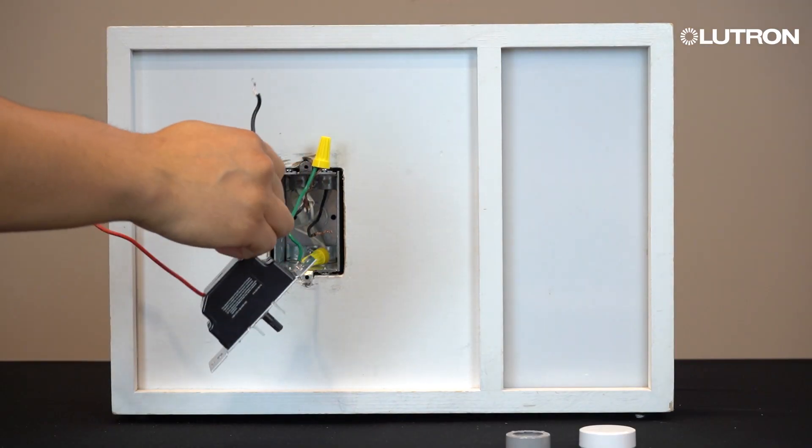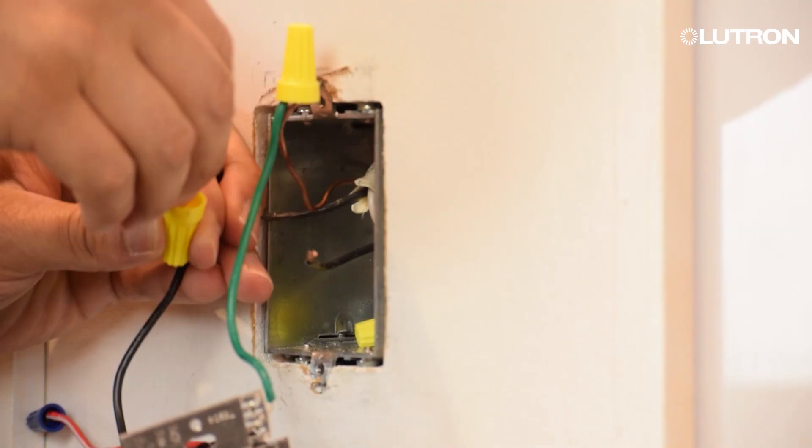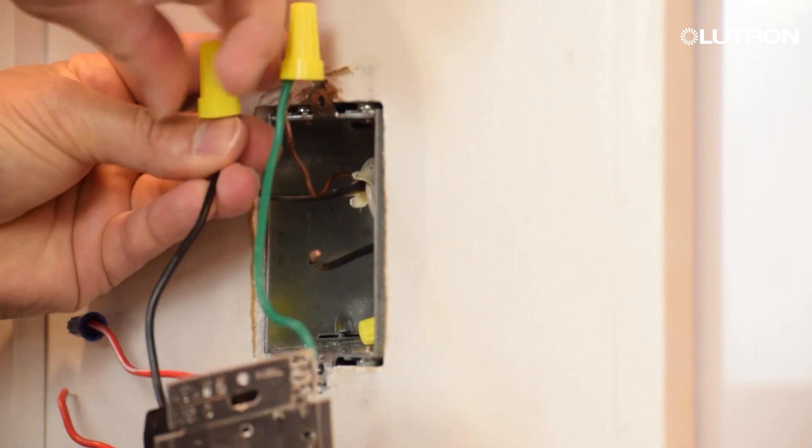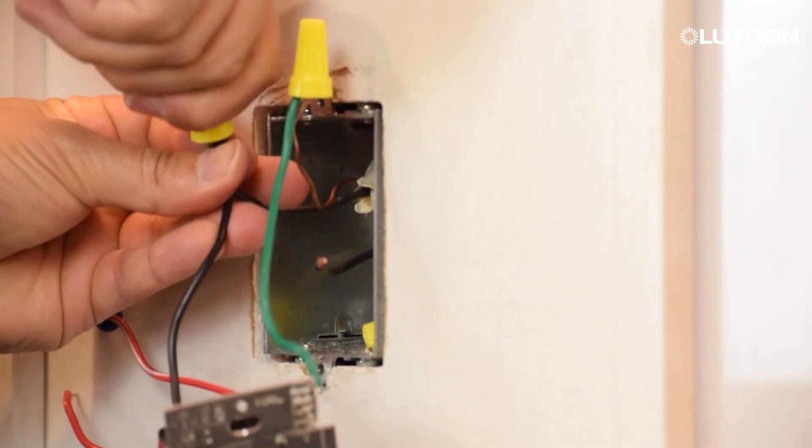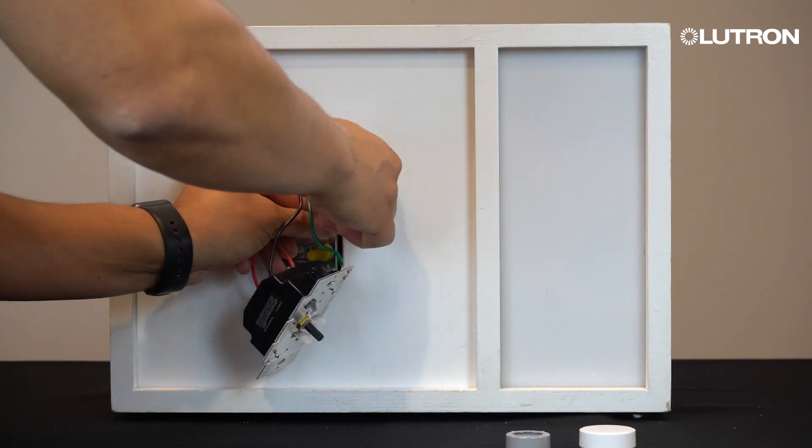For lights that are switched from one location, the black and red wires on the dimmer are interchangeable. Connect the black wire of the dimmer to either of the two wires in the wall. Then, connect the red wire to the last remaining wire in the wall.